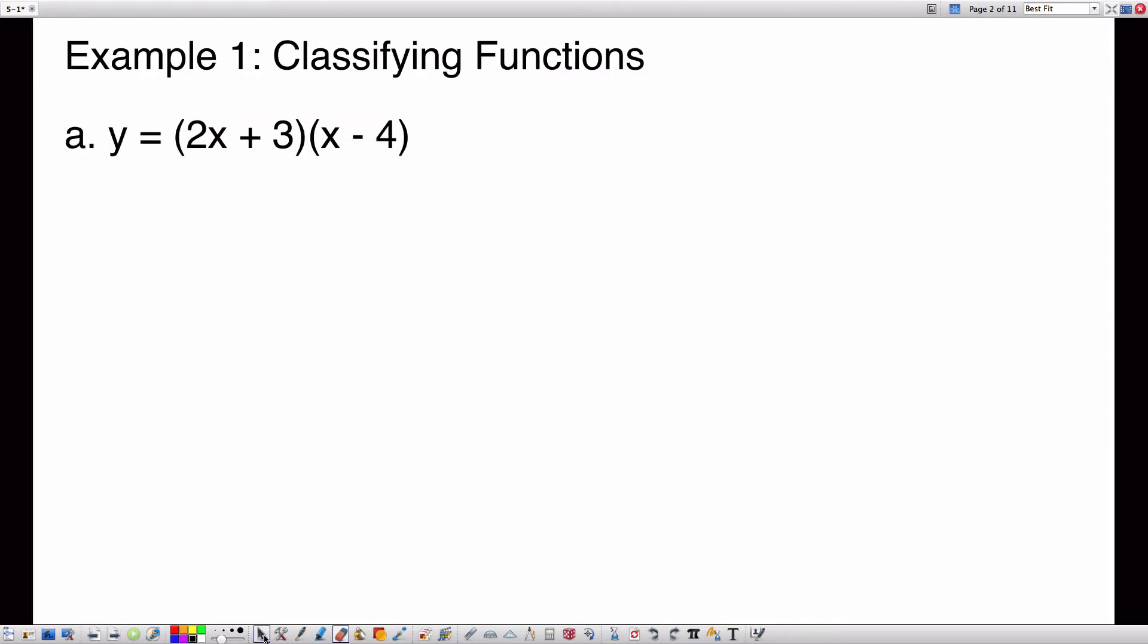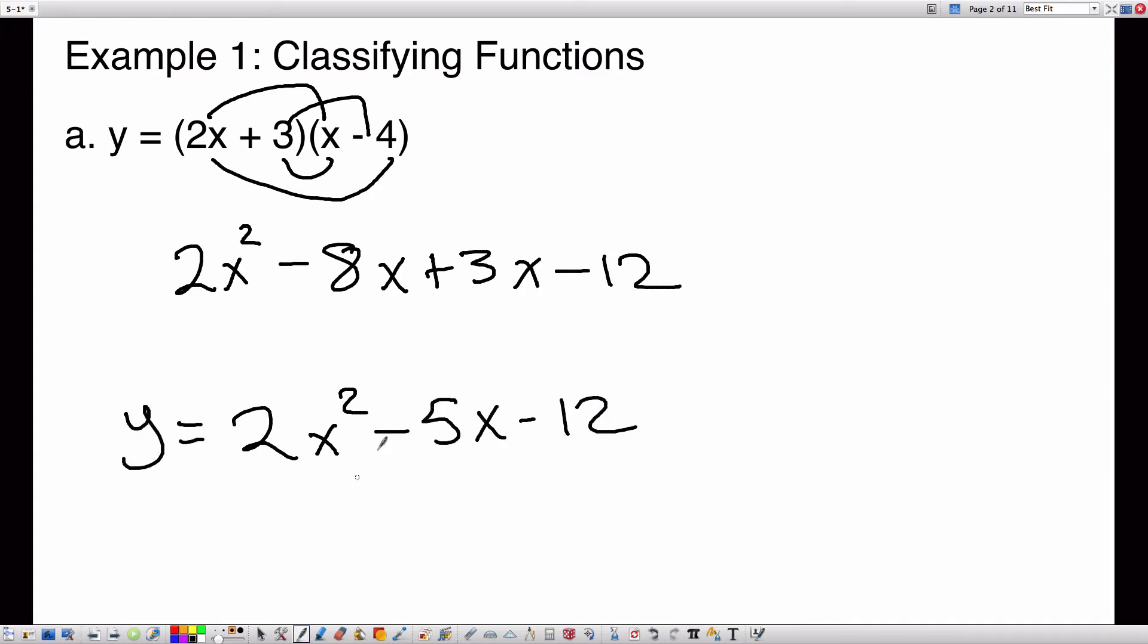Example 1, classifying functions. So we want to classify this function. The first thing we need to do is write this in standard form. So I'm going to multiply this out. 2x times x gives me 2x squared. 2x times 4 gives me negative 8x. 3 times x gives me 3x, and 3 times negative 4 gives me negative 12. I can simplify this middle term: 2x squared minus 5x minus 12. We have a quadratic term, so this is a quadratic function.